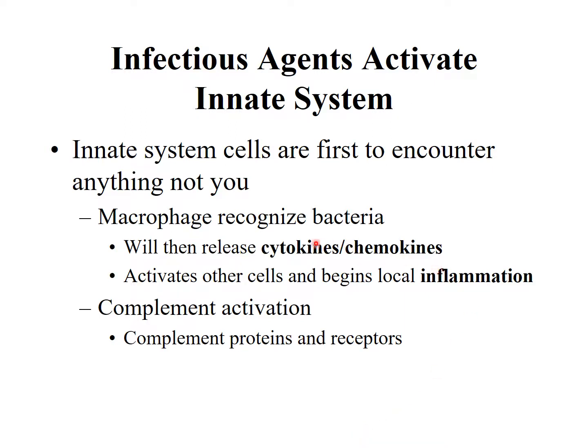Any cells that come into contact with these cytokines or chemokines will begin expressing new genes. They will take on a new appearance and start taking on new activities. These activities we bundle under what is referred to as inflammation — what you see whenever you get a cut, a scrape, or an insect bite: it gets red, it gets warm, it swells up.